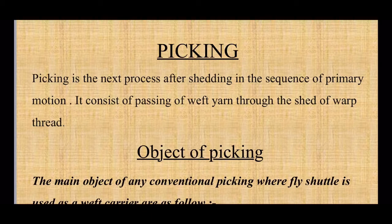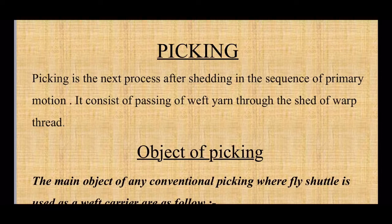Picking consists of passing the weft yarn through the shed of warp threads. We divide the warp threads into two layers, which is known as the shed, and when the shed is open we insert a weft thread using a weft insertion method — through the shuttle on shuttle looms, or depending on the loom type for shuttle-less looms.